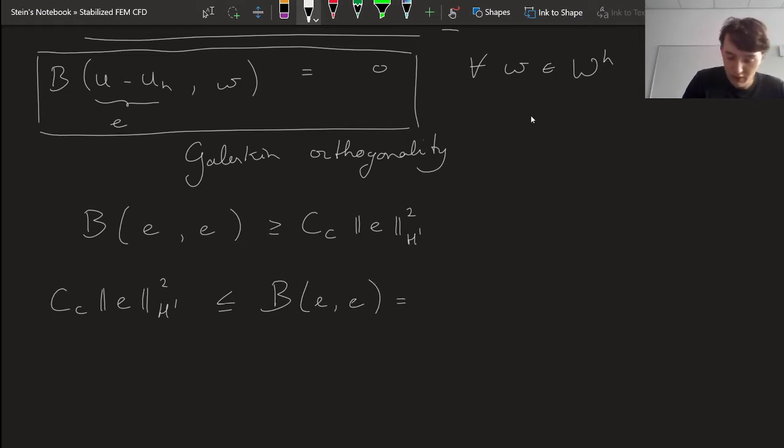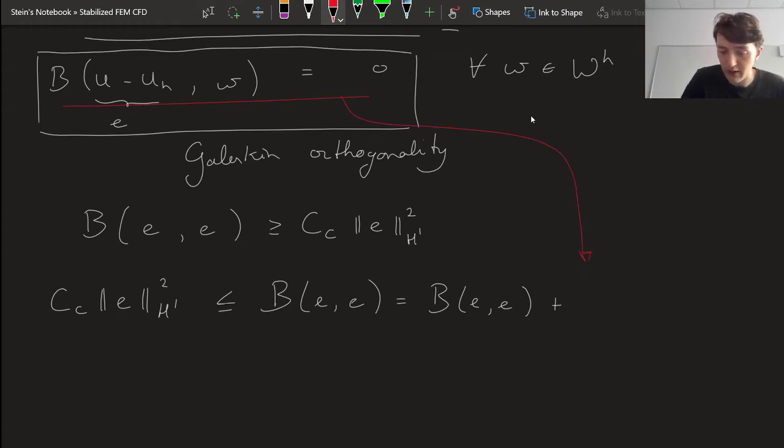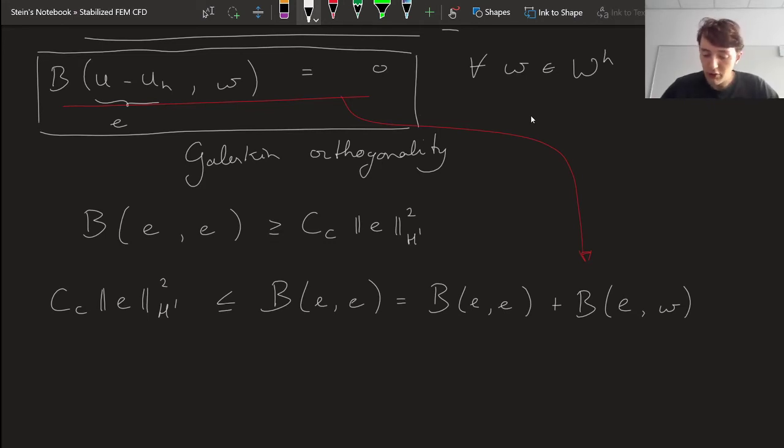Well that is going to be equal to the bilinear form of the error and the error plus this statement, or plus the Galerkin orthogonality term, because that is going to be zero, so I can add that. So plus the bilinear form of e and w. And that is going to be true for all choices of w in this discrete space. So now I will choose w, it's going to be equal to our solution u_h minus any other function v_h. That's what I'm going to choose, that's what I'm going to substitute for w. This has to be true for all w, so I can make a choice and it still has to be true. And I'll choose u_h minus some other function v_h.